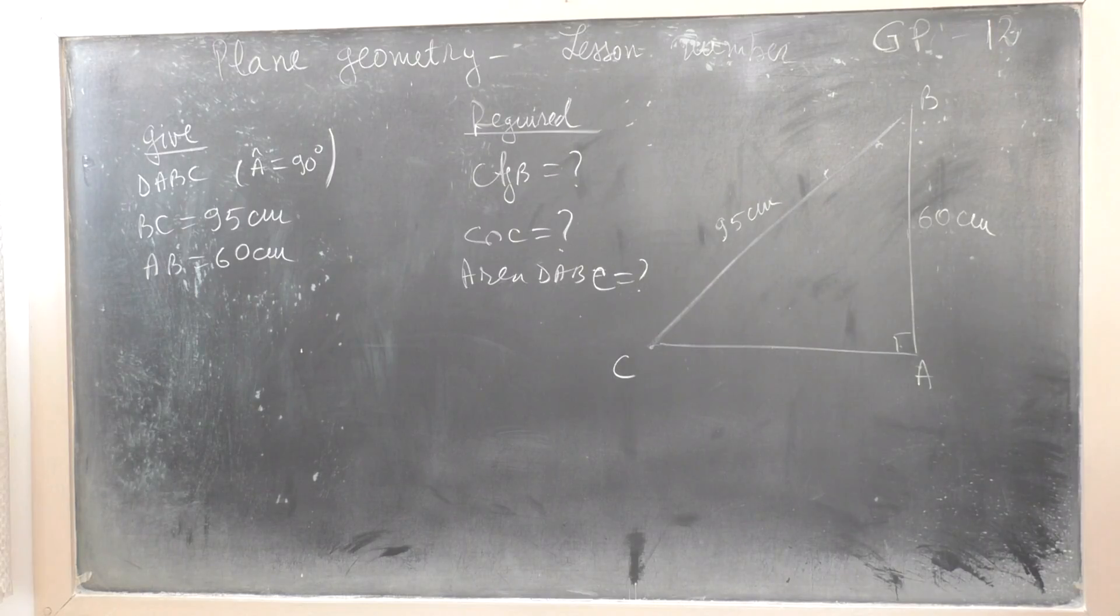Find cotangent angle B, cosine angle C, and area of triangle ABC.